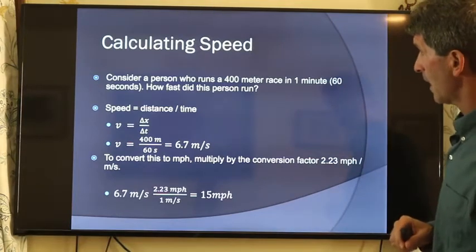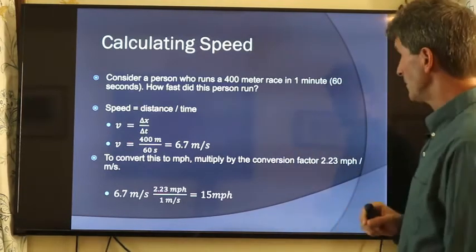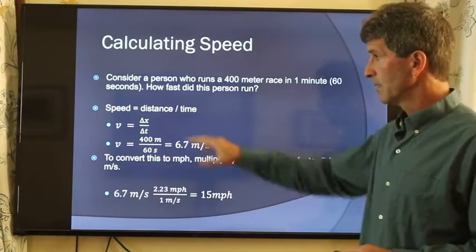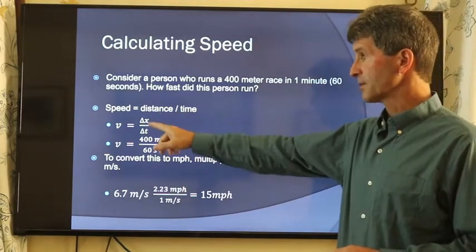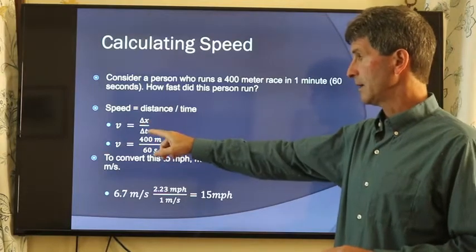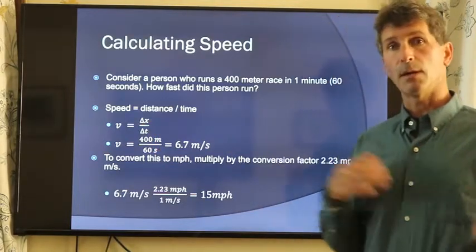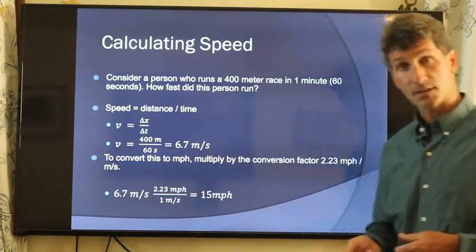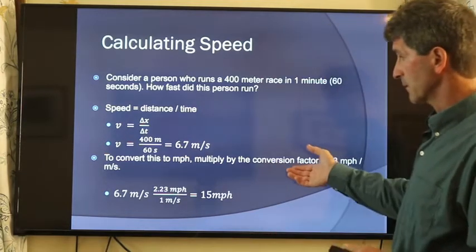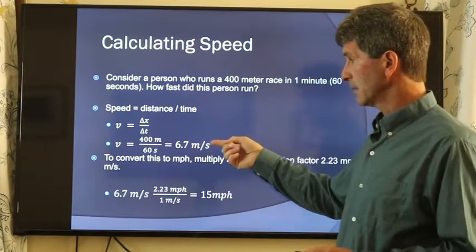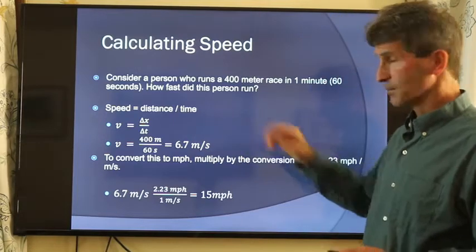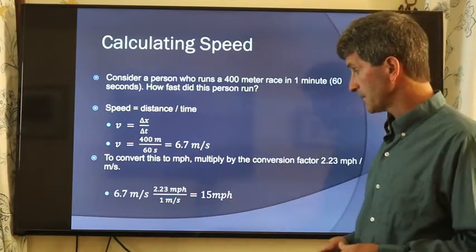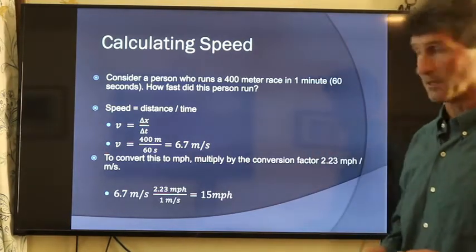Let's do a quick calculation. Consider a person who runs the 400 meter. They're able to do this in one minute. How fast did this person run? What was their average speed? Speed is distance divided by time. The race was done in 400 meters, and this runner completed it in one minute. We want SI units, so we're going to convert that to 60 seconds, so they're running at a rate of 6.7 meters per second. We want to convert this to miles per hour. We multiply by our conversion factor, and we get about 15 miles per hour.